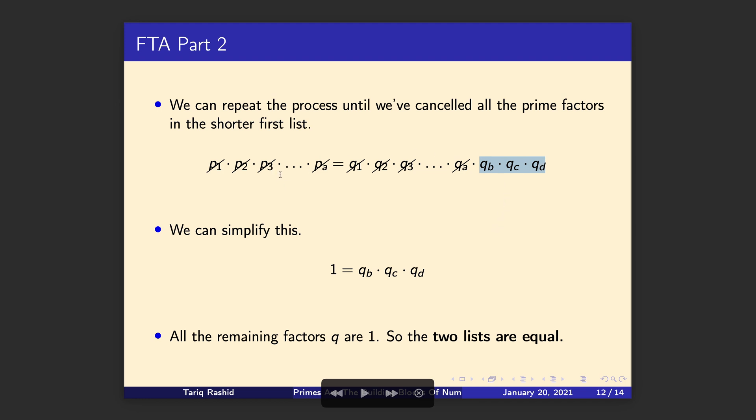But if we divide, we've crossed off, we've cancelled left and right, we're left with one equals those remaining factors. And that can only mean one thing, that they are all one. So in some sense they disappear because they are one. So that means the two lists are equal. And that means there's only one unique way of writing out a number in terms of prime factors.